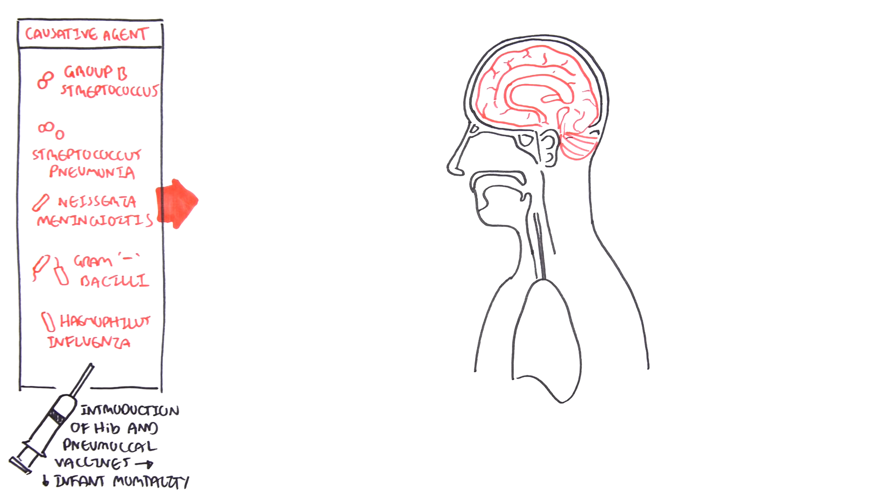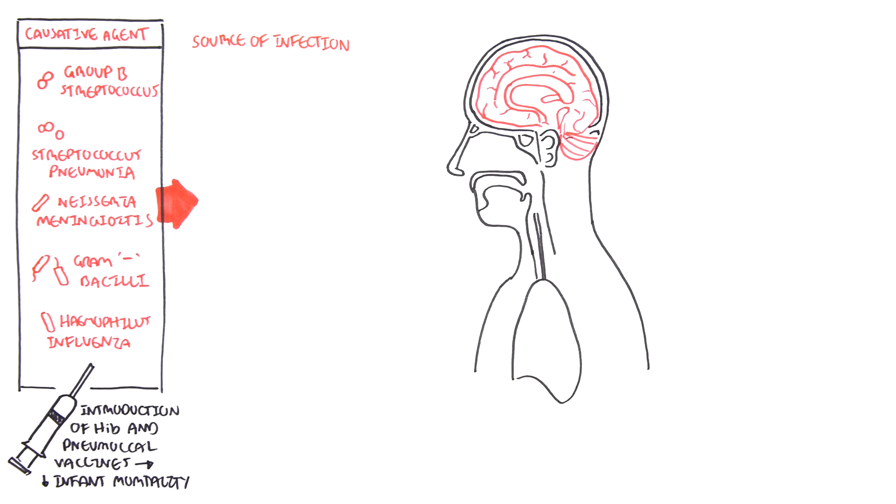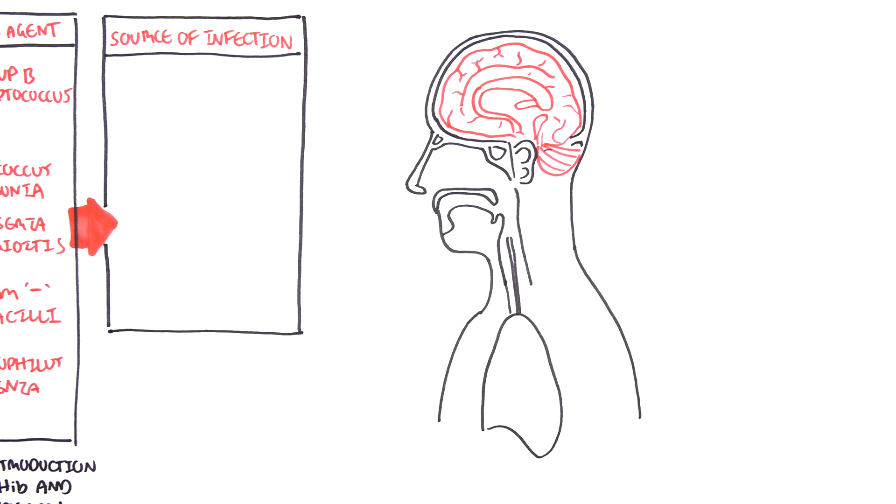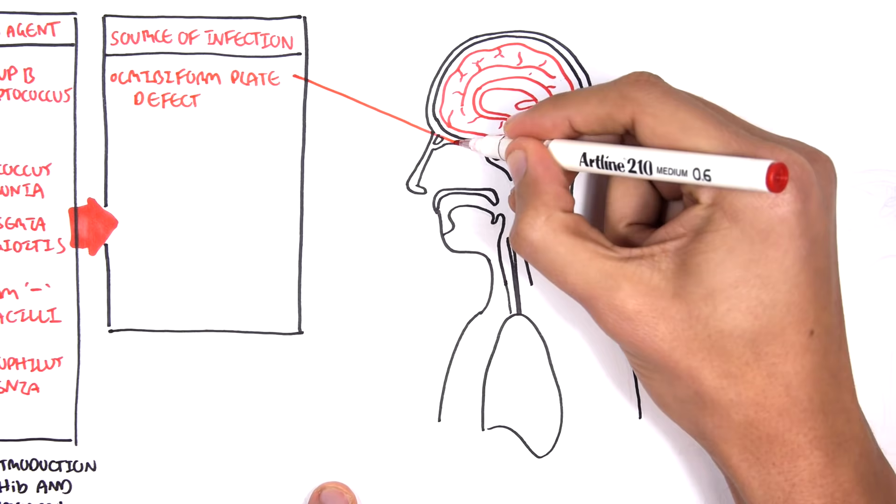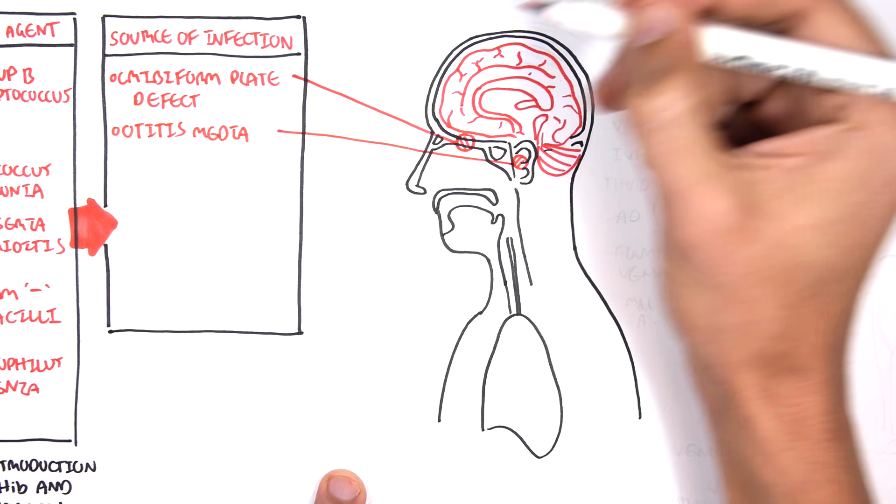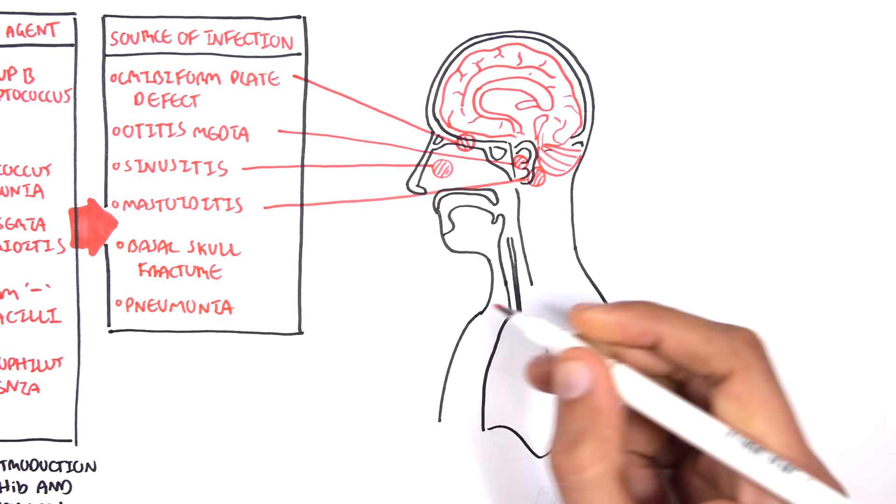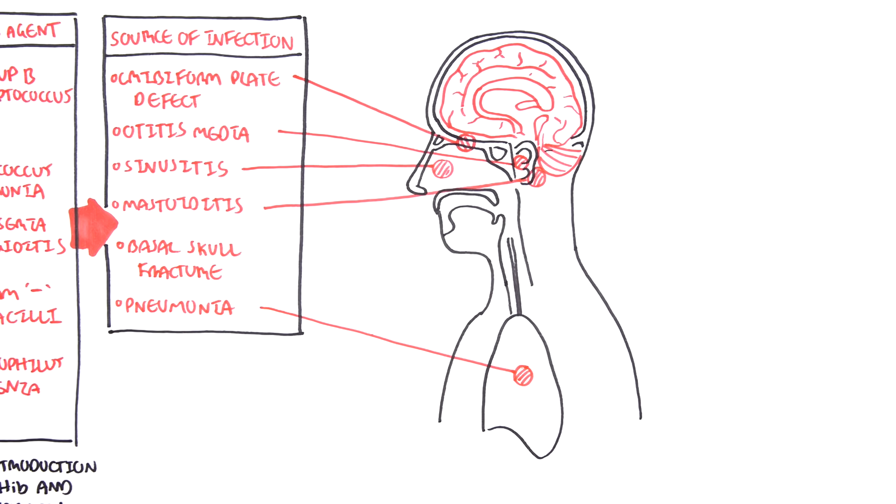The causative agents have to be in contact with the meninges in order to cause meningitis, but the meninges is essentially surrounded by the skull, because the meninges itself coats the brain. Therefore, the infective organisms usually cause a primary infection first, or they can enter the area because of some abnormality or deformity of the skull. For example, there can be a cribriform plate defect. The primary infection can be otitis media, sinusitis, there could be a basal skull fracture, it could be secondary to pneumonia. And all these primary problems can subsequently lead to meningitis.